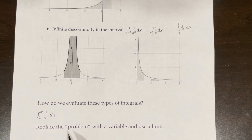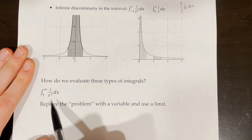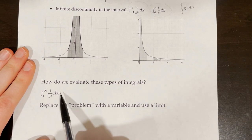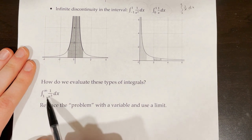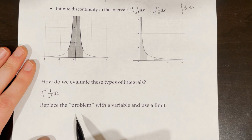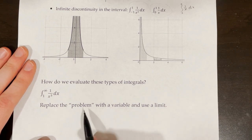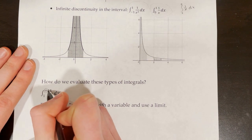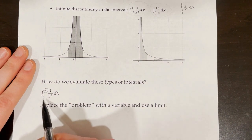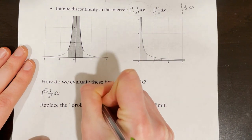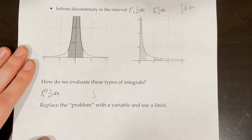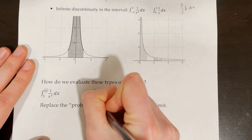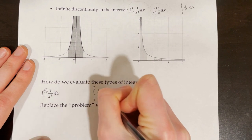So how do we evaluate these types of integrals algebraically? Let's take a look at this example: the integral from 1 to infinity of 1 over x cubed dx. This is an example of a problem with an infinite upper limit. The way that we're going to solve improper integrals is by replacing the problem with a variable and using a limit. The problem is the infinity, so if we had an actual number there we could integrate. I'm going to replace that infinity with a t, so I'm integrating from 1 to t of 1 over x cubed dx.